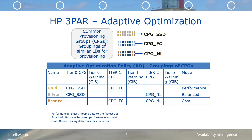HP 3PAR's auto-tiering technology is called Adaptive Optimization, or AO. Let's look at the policies in an example with three CPGs: SSD, fiber channel, and near-line. We have a gold AO, which is SSD and fiber channel, and has a mode of performance. This instructs AO to promote as much activity to the SSD tier as possible.